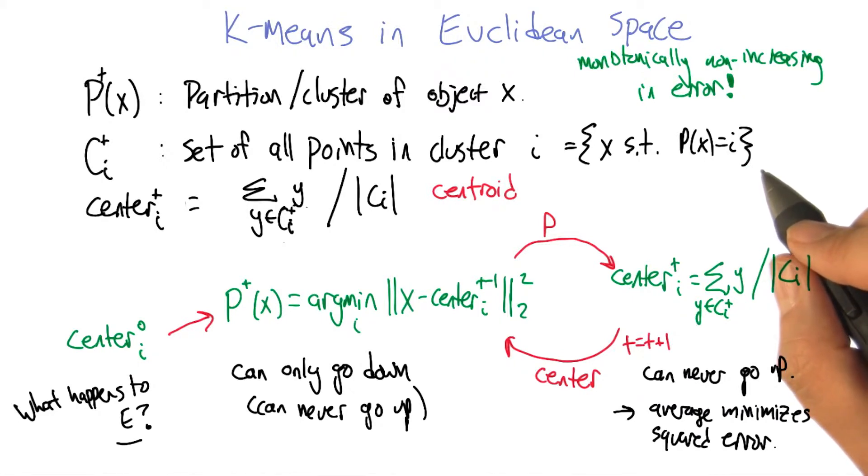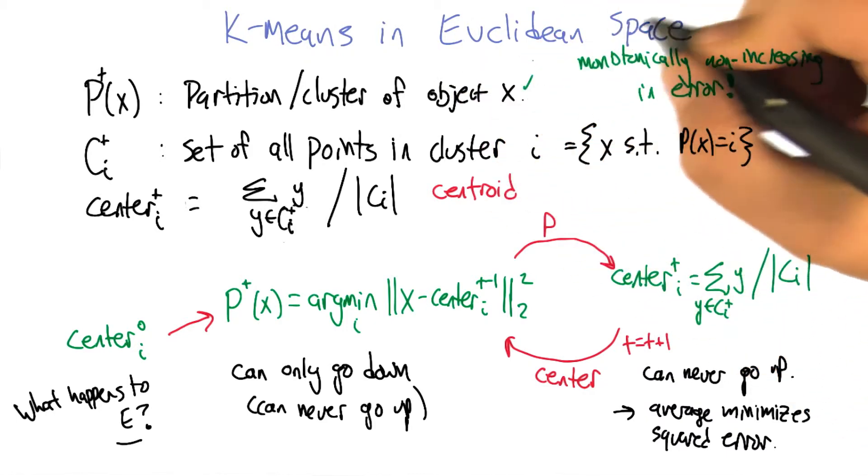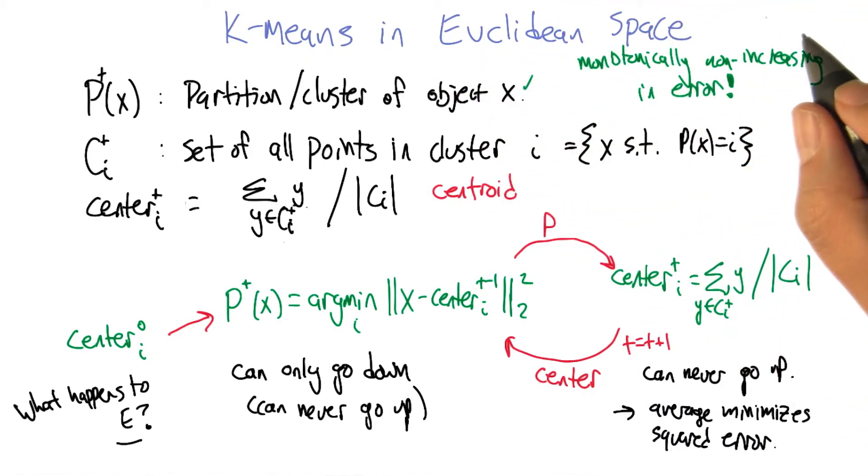Here's the argument. You ready? Sure. There are a finite number of configurations. There have to be a finite number of configurations, because there's a finite number of objects. And there's a finite number of labels they can have. And once you've chosen a label for a bunch of the objects, the centers are defined deterministically from that.